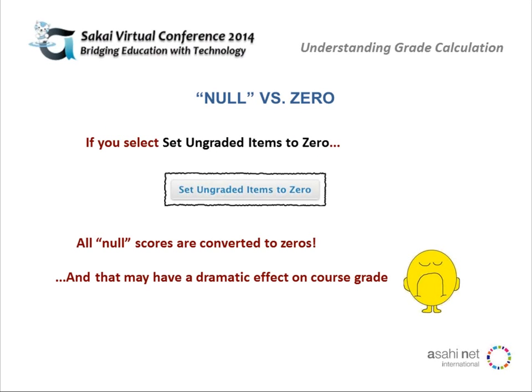That's the idea behind the 'set ungraded items to zero' button, which you should be very careful about using. If you click on this button and follow through, you're going to convert all those null scores to zeros, and that is going to be really bad.